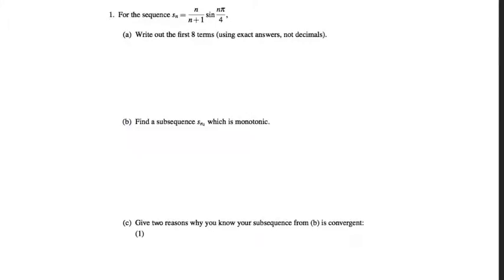Group assignment number 7 is asking you to think about this particular sequence. And this sequence has the formula n over n plus 1 times the sine of n pi over 4. Just first of all, looking at the formula for this sequence, what can you tell me about it?